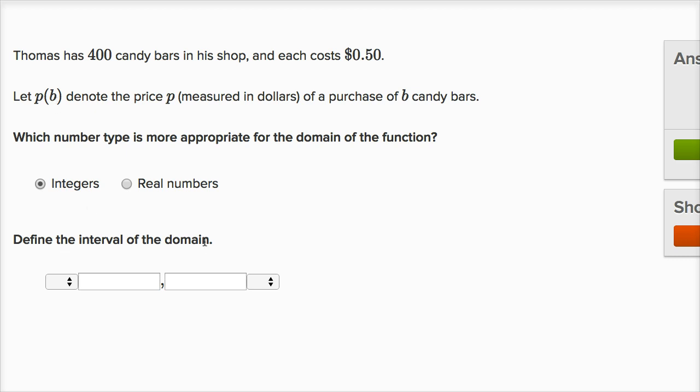Now they say define the interval of the domain. So the fewest candy bars I could buy are zero candy bars, and I have to decide, do I put a bracket or do I put a parentheses? I could actually buy zero candy bars, so I'm gonna put a bracket. If I put a parentheses, that means I could have values above zero, but not including zero. But I want to include zero, so I'm gonna put the bracket there.